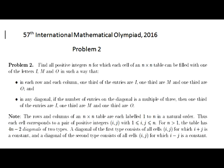IMO 2016, problem number 2. Find all positive integers N for which each cell of an N-by-N table can be filled with one of the letters I, M, and O — which stand for IMO, obviously — in such a way that in each row and each column, one-third of the entries are I, one-third are M, and one-third are O. And in any diagonal, if the number of entries on the diagonal is a multiple of 3, then one-third of the entries are I, one-third are M, and one-third are O.